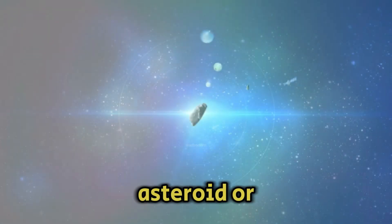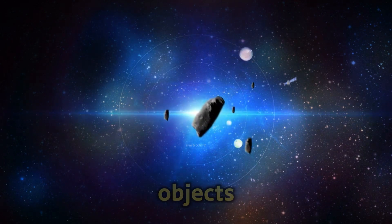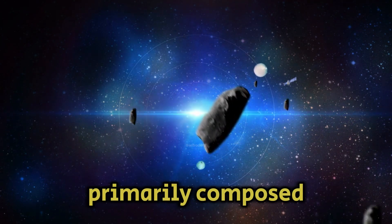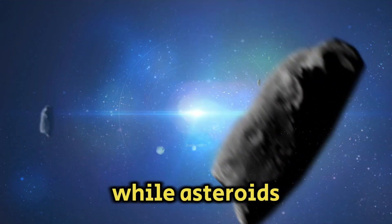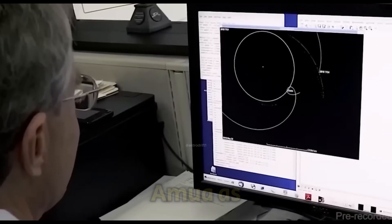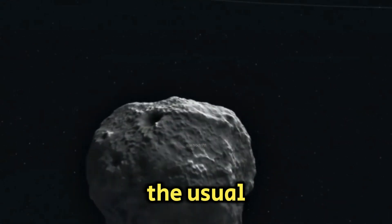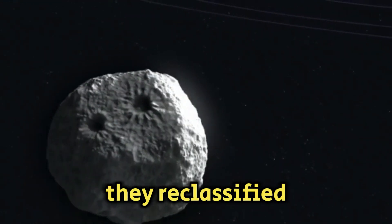Whether it's an asteroid or a comet, let's explore the distinction between these two celestial objects. Comets are primarily composed of ice, while asteroids are made of rock. Initially, scientists classified Oumuamua as a comet, but when it zipped past the Sun without displaying the usual cometary traits, they reclassified it as an asteroid.